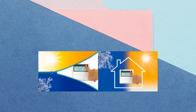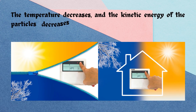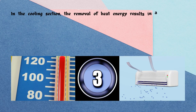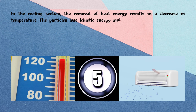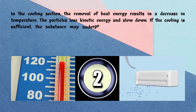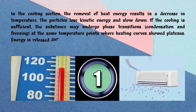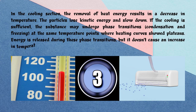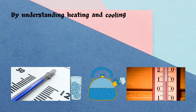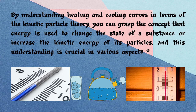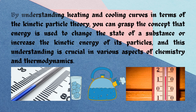In the cooling section, energy is being removed from the substance, causing the temperature to decrease and the kinetic energy of the particles to decrease. The cooling section mirrors the heating section but in reverse order. The removal of heat energy results in decreased temperature; particles lose kinetic energy and slow down. If cooling is sufficient, the substance undergoes phase transitions — condensation and freezing — at the same temperature points where the heating curve showed plateaus. Energy is released during these phase transitions but does not cause a decrease in temperature. This understanding of energy changing the state of a substance or increasing kinetic energy is crucial in chemistry and thermodynamics.